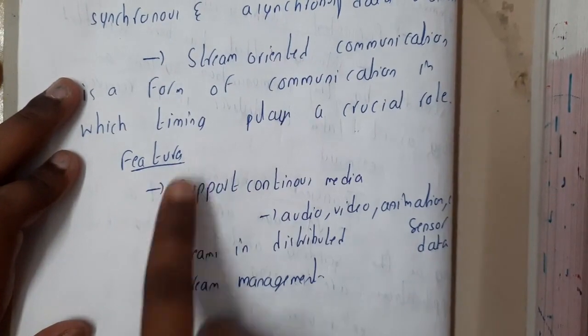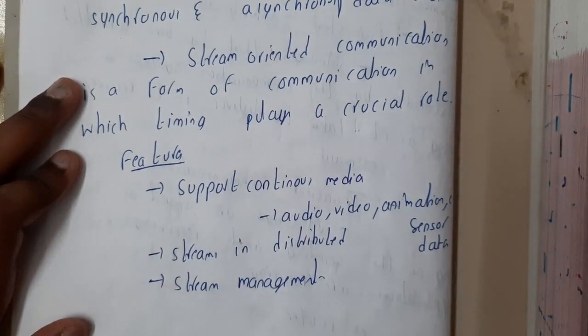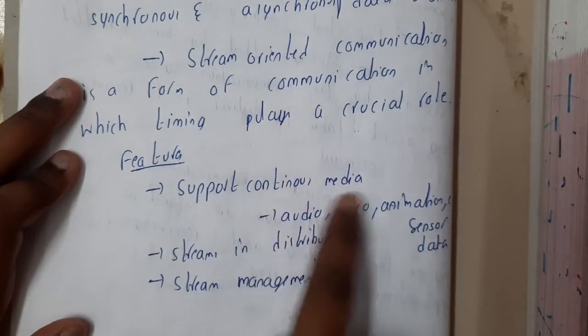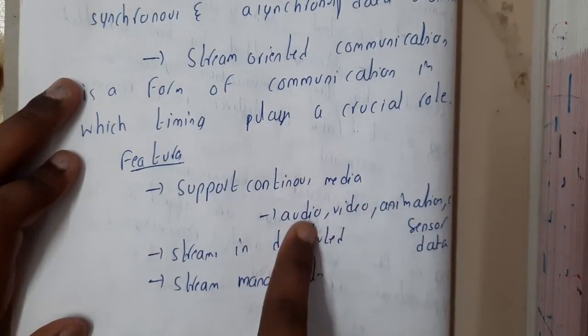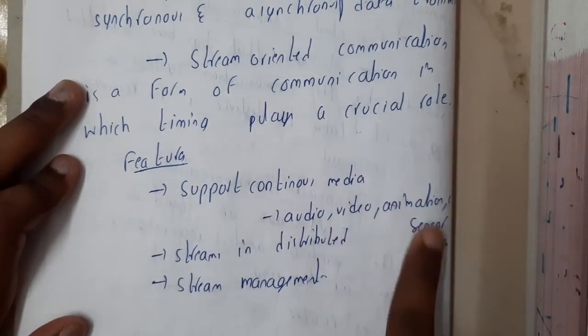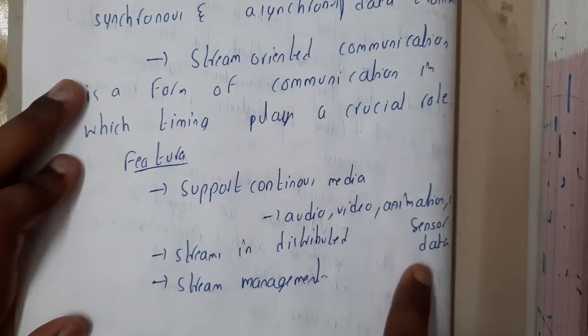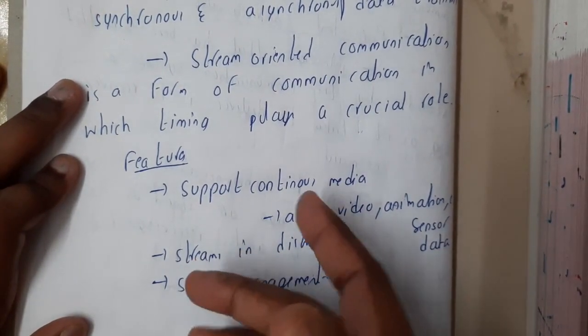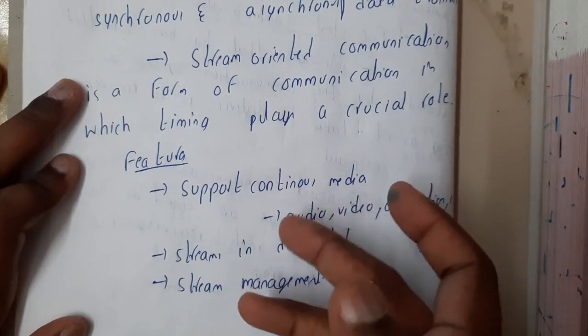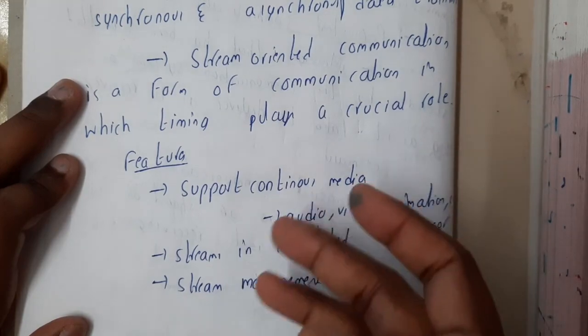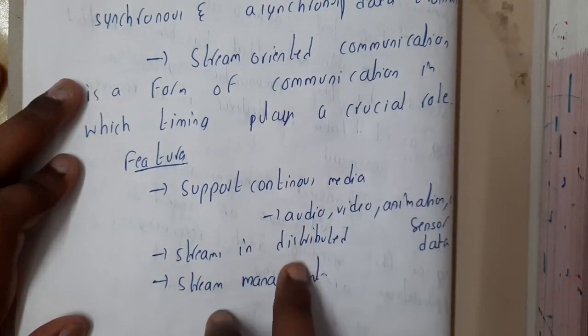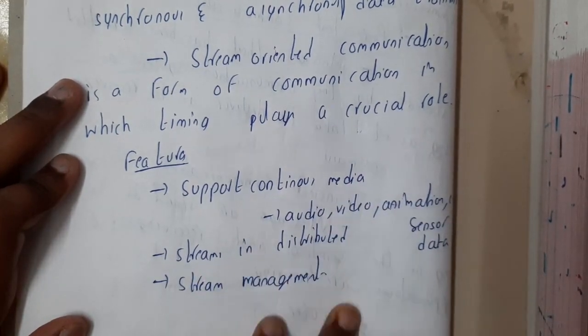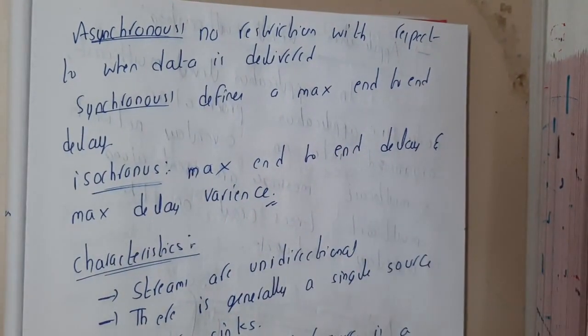The features of stream-oriented communication include support for continuous media. The media could be audio, video, animation, or sensor data — for example, IoT devices sending temperature data, stock exchange data, and similar things. Streams are distributed and can be managed.